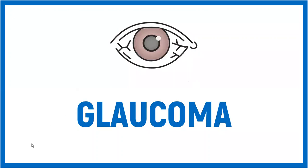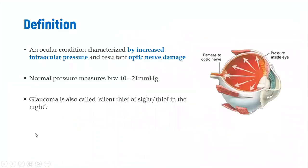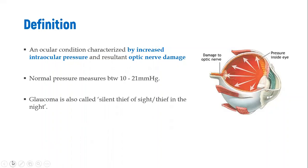We will look at a very important eye condition called glaucoma. Glaucoma is a problem of the eye, specifically increased intraocular pressure, which ultimately leads to damage of the optic nerve, consequently affecting peripheral vision and ultimately even the central vision. Normally, intraocular pressure is between 10 to 21 mmHg, and anything above this will lead to increased pressure on the optic nerve. Glaucoma is also called the silent thief, and we'll see why.